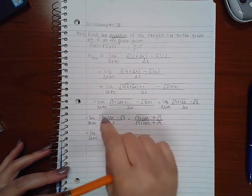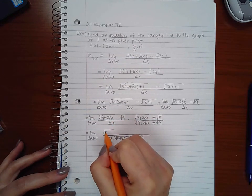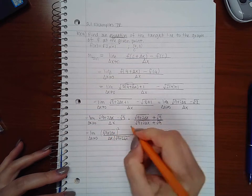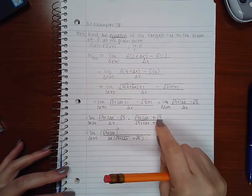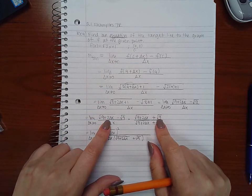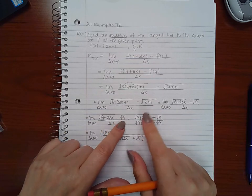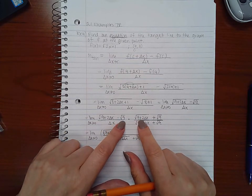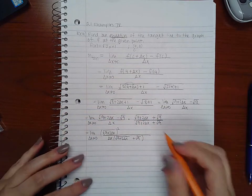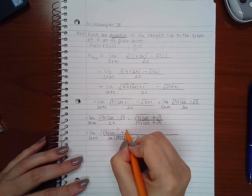In the top I can go ahead and foil that out, so I end up with nine plus two delta x squared. This will give me a positive square root of nine times square root of nine plus two delta x. Multiplying these two will give me a negative square root of nine times square root of nine plus two delta x, so those two factors will cancel.